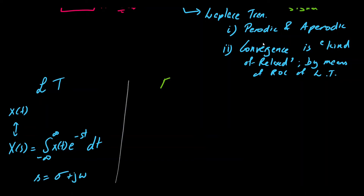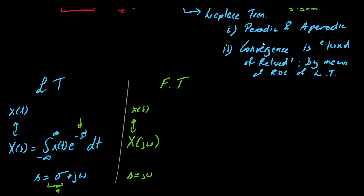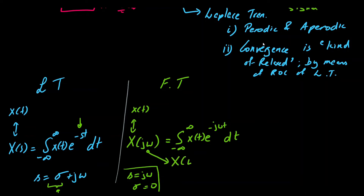The Laplace transform is equivalent to the integral from minus infinity to infinity of x(t) e^(−st) dt, where s equals sigma plus j*omega. Moving to the Fourier transform, x(t) has a transform X(j*omega). The real part sigma is set to zero, so we set s equal to j*omega. Our integral becomes the integral from minus infinity to infinity of x(t) e^(−j*omega*t) dt. This notation is often referred to as simply X(omega) as well.